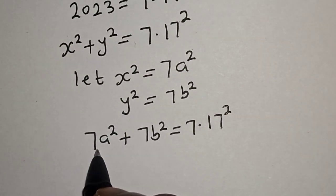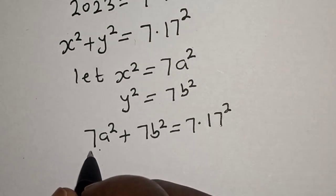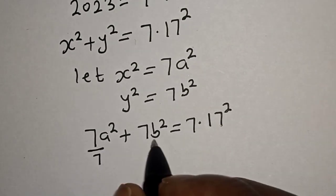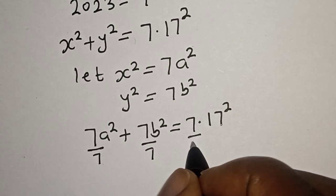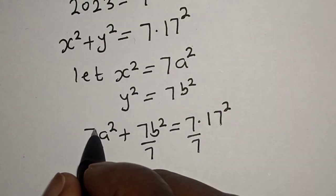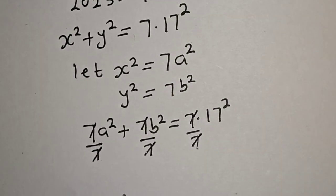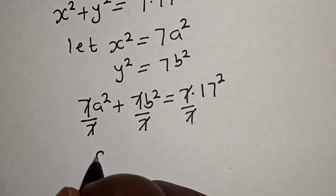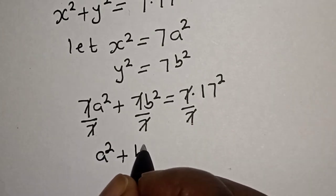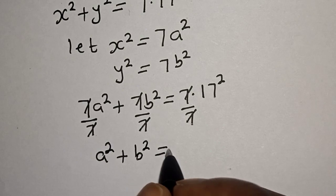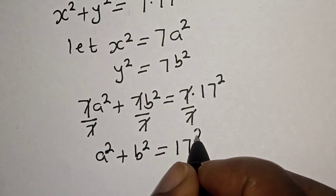Now we have 7 here, 7 here, and 7 here. Let's divide all through by 7. We divide each term by 7 — this cancels this, this cancels this, and this 7 cancels this — so we have a squared plus b squared is equal to 17 squared.